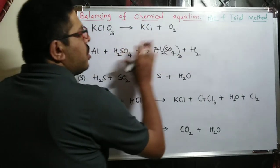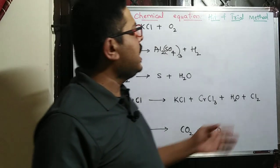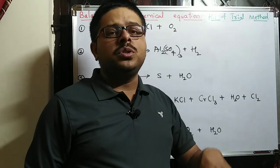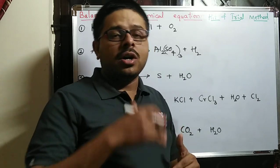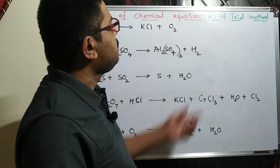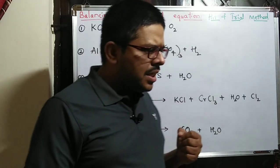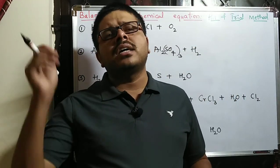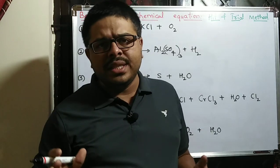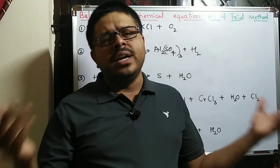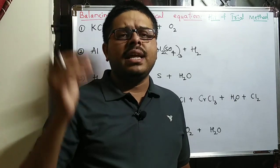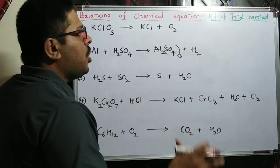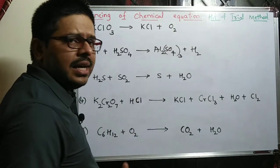Balancing a reaction involves several methods. Here we are discussing the hit and trial method. In the redox reaction chapter we will discuss the half-electron method and oxidation number method. The hit and trial method means you try a number — if it is balanced, fine; if not, you add another number and try again.